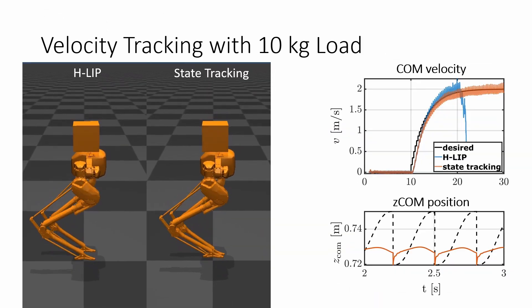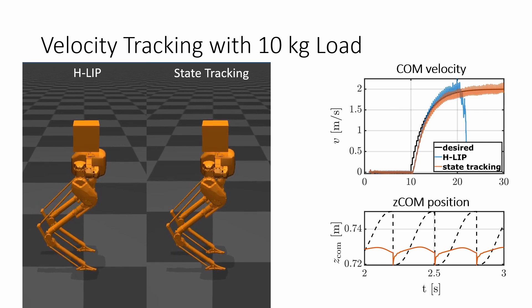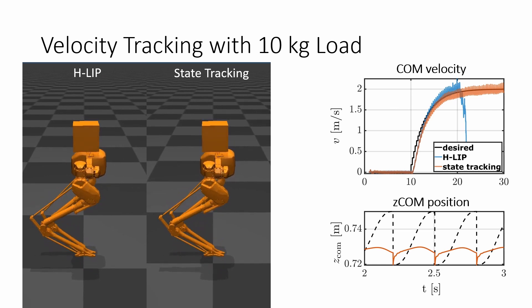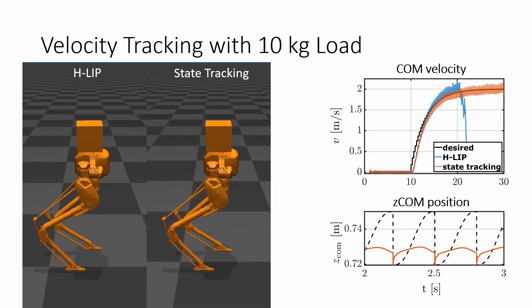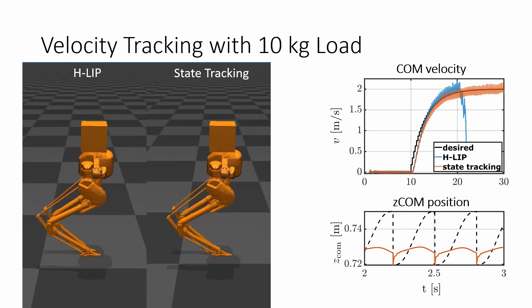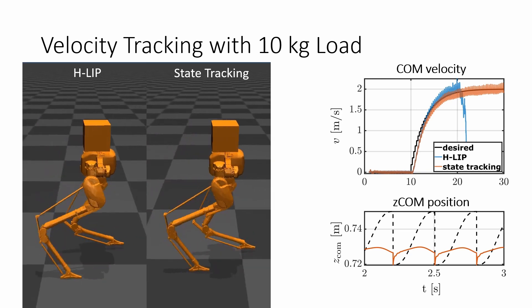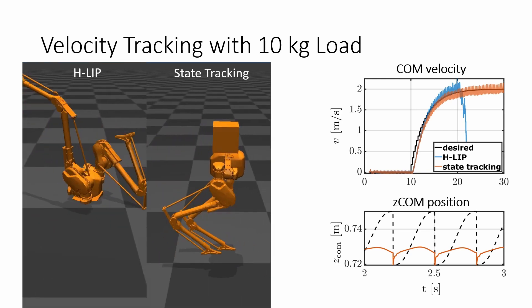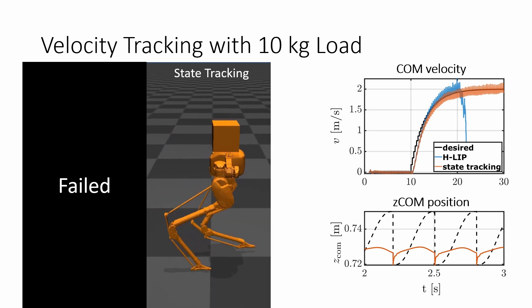Next, we assess the adaptive step-to-step controller under an additional 10 kg load, which is unknown to the foot placement planner and the low-level tracking controller. As a reference, CASI's weight is around 33 kg, so this is about a third of its total weight. With extra weight, the real-life center of mass height is lower than the commanded 0.75 m. The robot still achieves great performance with the adaptation scheme.